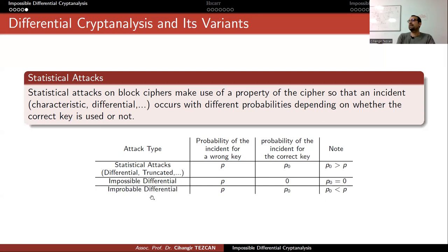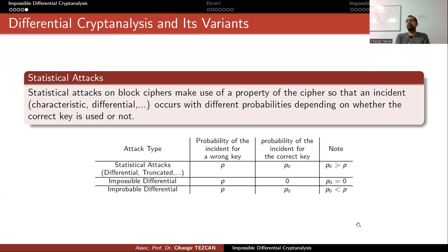This is what I discovered as improbable differential cryptanalysis. Obtaining a property that is highly likely for wrong keys but less likely for the correct key requires special analysis of the cipher, but it can be done. You still need to distinguish different binomial distributions — the correct key follows a binomial distribution with p0 and n, while wrong keys follow one with p and n. Everything depends on the number of wrong keys and the difference between these probabilities: if they are very close, more pairs are needed.